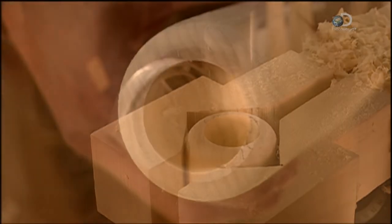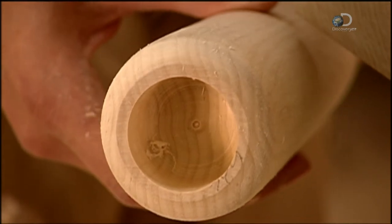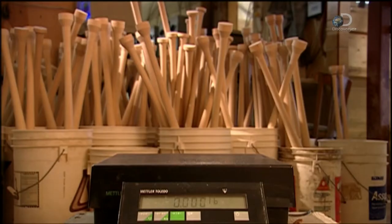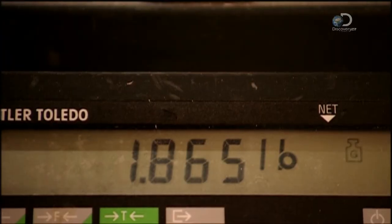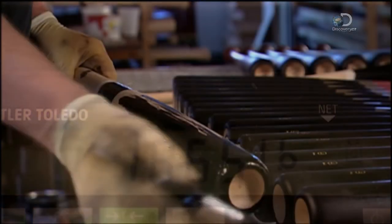Some players prefer a cupped bat because it balances differently by removing weight from the end of the bat. Now the bat is placed on the scales for final weighing, and it's exactly what the player ordered.